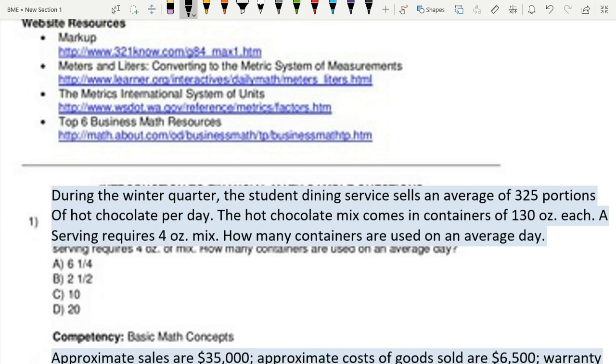During the winter quarter, the student dining service sells an average of 325 portions of hot chocolate per day. The hot chocolate mix comes in containers of 130 ounces each. A serving requires four ounce mix. How many containers are used on an average day? I just retyped the question on top so you guys could read it more clearly because it came up in terrible quality.